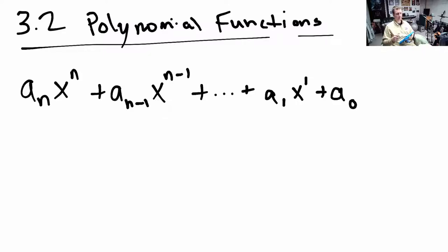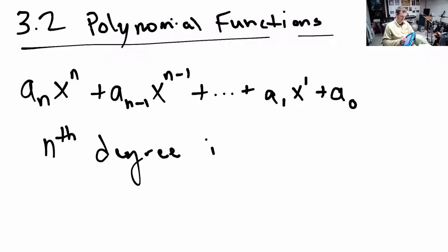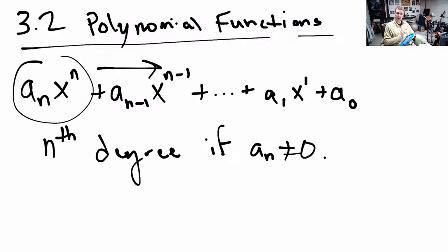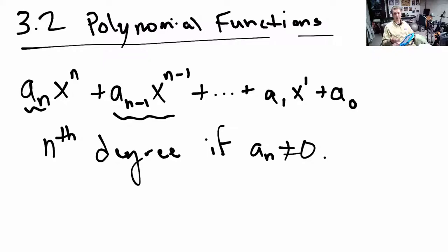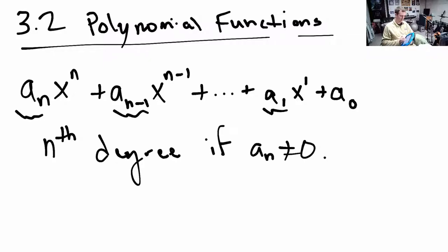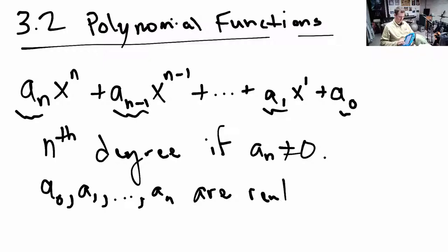This is a standard polynomial. It is nth degree if a sub n is not equal to 0. If it is zero, then we look at the next smallest power of x. The powers decrease going to the right, so if a sub n is 0, it might be an n minus 1th degree polynomial if a sub n minus 1 is not 0. That's how you determine the degree — you look at the highest power on the variable. Each of these numbers multiplied by the variables are called coefficients. So a sub 0, a sub 1, through a sub n are real numbers called coefficients.